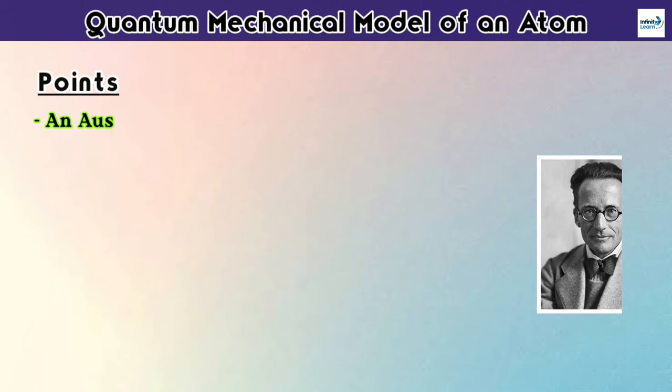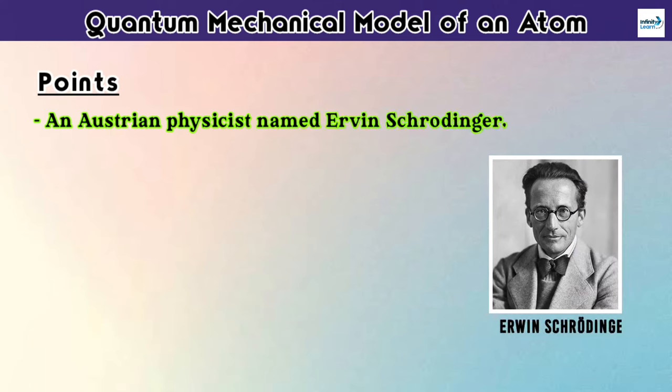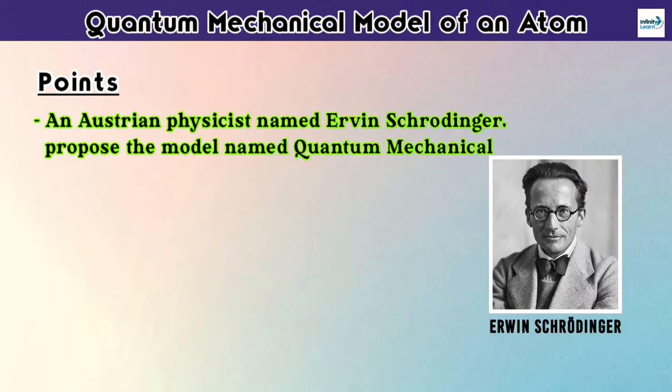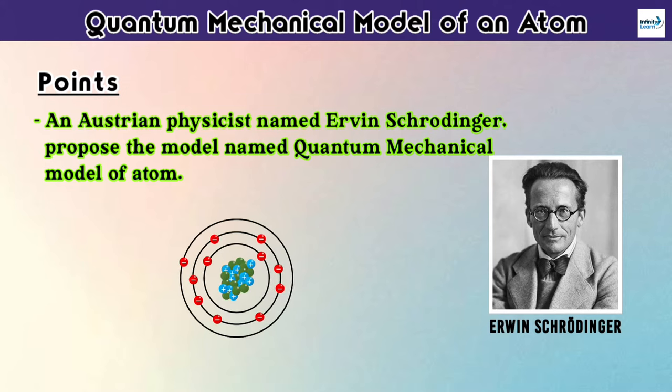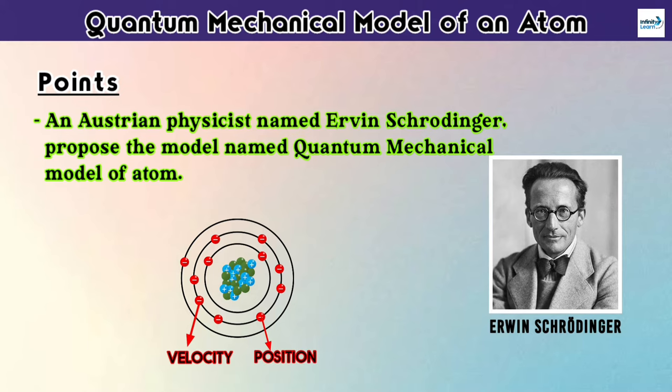And for that, an Austrian physicist named Erwin Schrödinger proposed a model named quantum mechanical model of atom. By using the point that electrons are present in the orbits around the nucleus, we can find the velocity of an electron and also the position of an electron, about which we will learn in this topic.